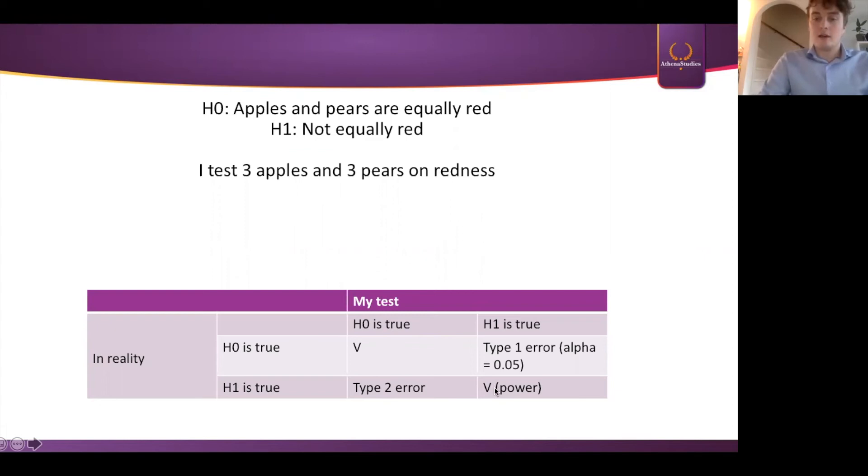Well lastly, there is a chance that H1 is true. So my test says, okay, there is an effect. And in reality there is also that effect. And we call that power. So what is power? Power means, let's assume that in reality there is an effect. What is the chance that my test is also going to find that effect? And that chance we call power. And obviously you want your power to be as high as possible.